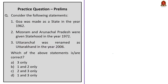Today we have four questions and one quiz question. First question: Consider the following statements. Statement 1 — Goa was made as a state in the year 1962. This statement is incorrect. Goa was made as a union territory in 1962 and was made a state only in 1987. Since Statement 1 is incorrect, we can eliminate options B and D. Statement 2 — Mizoram and Arunachal Pradesh were given statehood in the year 1972. This is also incorrect because Mizoram, Arunachal Pradesh, and Goa were given statehood in 1987. It was Manipur, Tripura, and Meghalaya that were given statehood in 1972. So the correct answer is option A, 3 only.